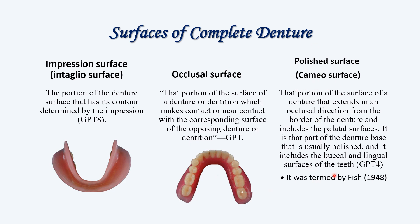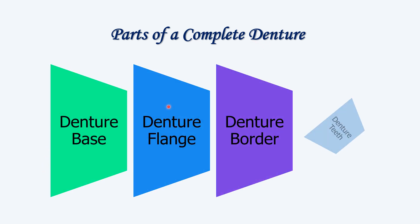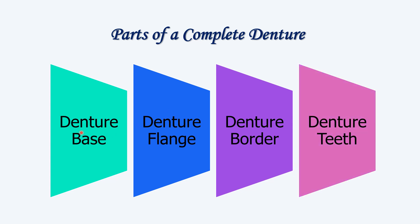The term polished surface was given by Fish in 1948. Now moving on to the last topic — which is the parts of a complete denture. There are different parts: denture base, denture flange area, denture border, and denture teeth — basically base, flange, border, and teeth. We will learn each one separately.